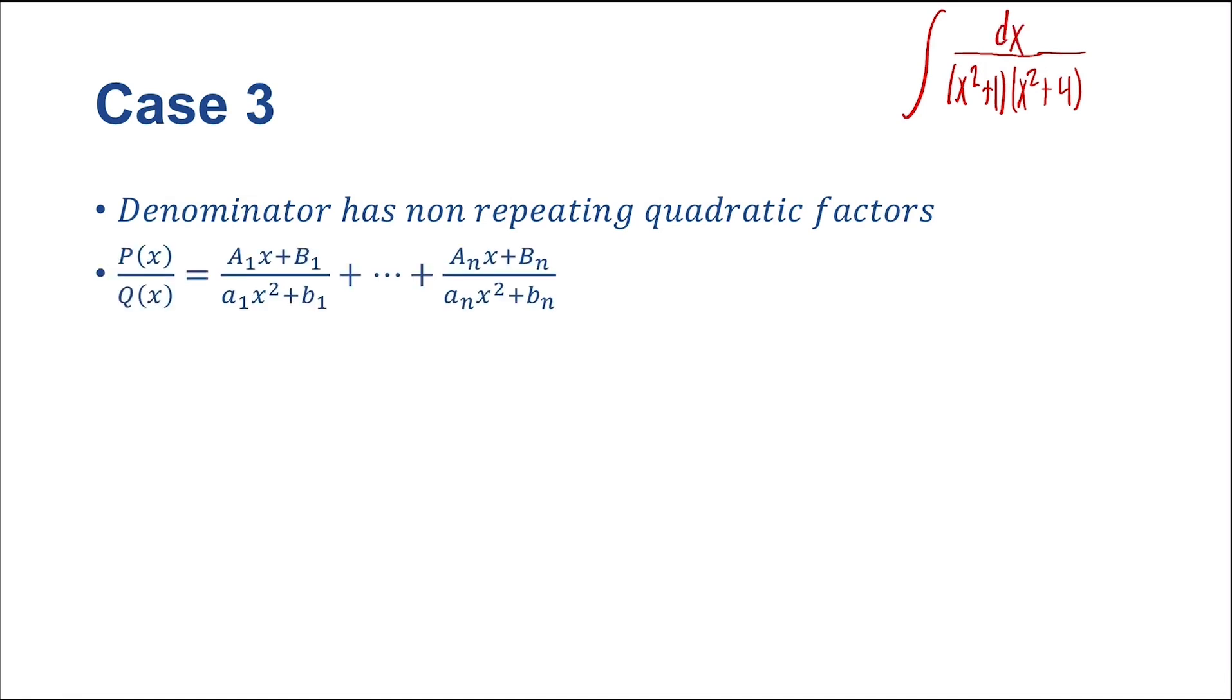So let's give the abstract example as we've been doing. We say p of x over q of x is equal to... Now we've got coefficients up here that have x dependence or order 1. So we've got a sub 1 x plus b sub 1 over a sub 1 x squared plus b sub 1, all the way up to a sub n x plus b sub n over a sub n x squared plus b sub n. So this is kind of similar abstract stuff that we've been dealing with in cases 1 and 2 as well. But, as always, an example seems to help everything out.